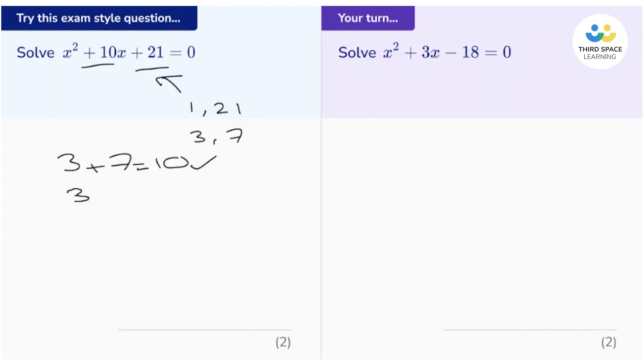Next, we've got 3 multiplied by 7, which is positive 21, which is what we want. So all that's left to do is to open a pair of double brackets.